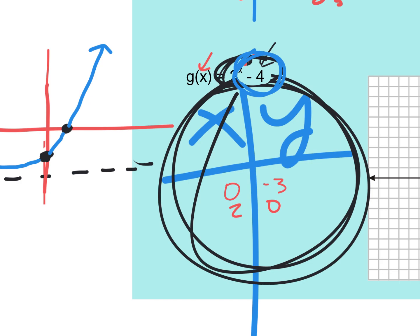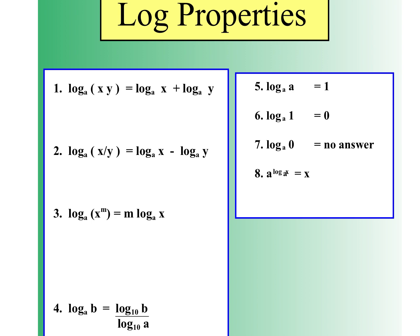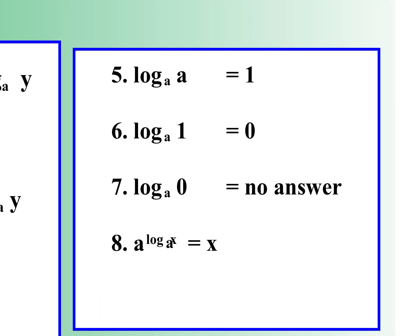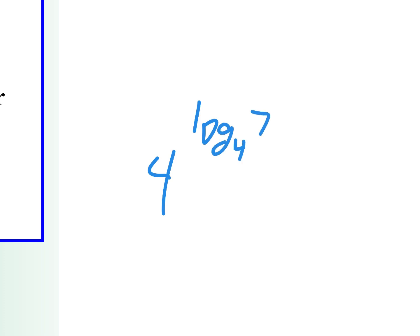Now let's get to some of these properties. If the base is the same as the argument, the answer is one. If there's a one in the argument you get zero. If there's a zero in the argument, that's the asymptote — not just no answer. If there's a negative in the base or argument, there's no answer. And when the base matches, the answer is right there: four to the log base four of seven is just seven.